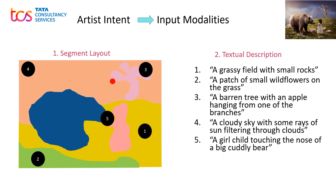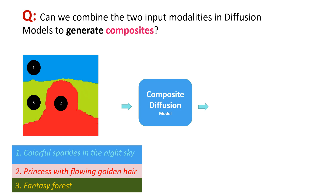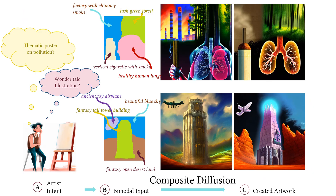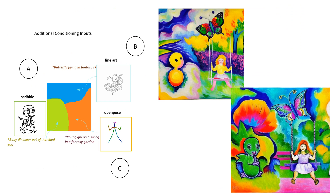The idea is: can you capture the artist's intent in the form of a segment layout, provide descriptive textual descriptions for each of these segments, and use diffusion models to create a composite that meets the properties of the whole — in the form of a model making a beautifully blended image? We assert that we can do this. Composite Diffusion achieves this where the input modality for an artist is principally bimodal: a segment layout (colors signify the segment, not importance) plus textual descriptions for each segment, and the final generated output is a composite whole.